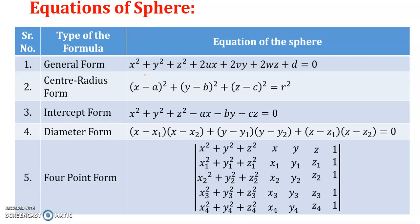The equation of a sphere in general form is given by x² + y² + z² + 2ux + 2vy + 2wz + d = 0, where the coordinates for the center of the sphere are (−u, −v, −w) and the radius is evaluated using the formula: square root of (u² + v² + w² − d).